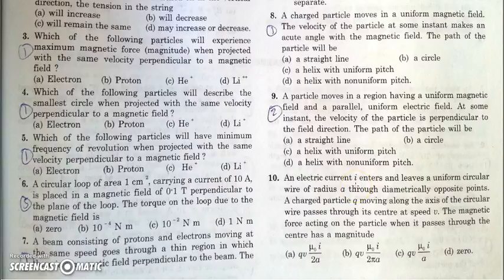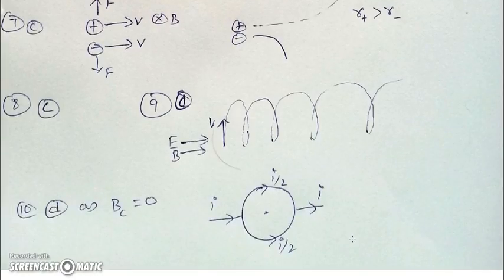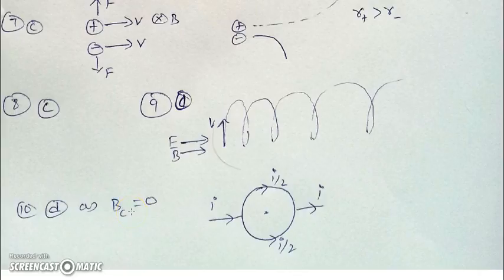In the next question, there is a current entering and leaving a uniform circular wire of radius A through two diametrically opposite points, and there is a charge at the center moving with speed V. We have to find the force experienced by it. The magnetic field at the center in this situation is zero, because equal amounts of current are divided and the magnetic fields from each half are opposite to each other. Hence, the net magnetic field at the center is zero, and therefore the force on the charge will be zero.